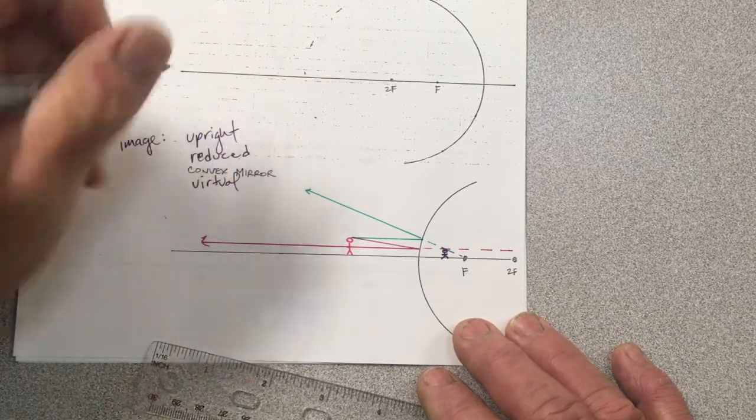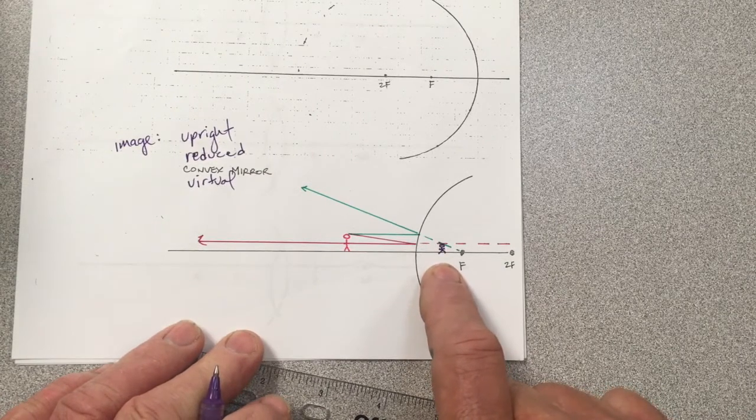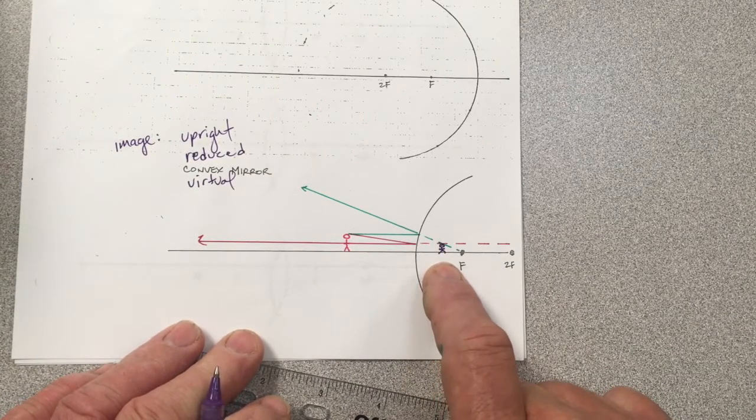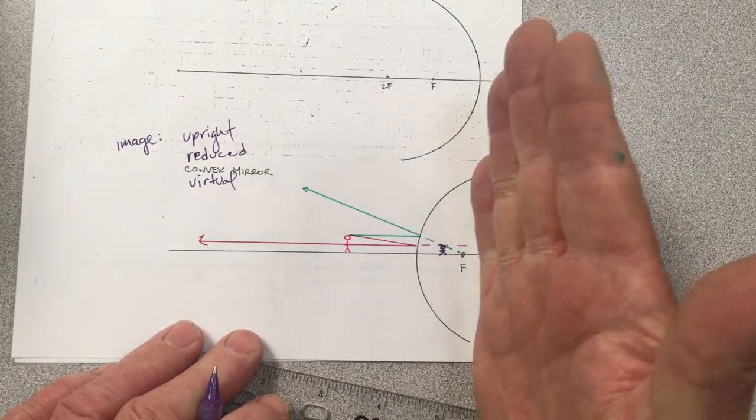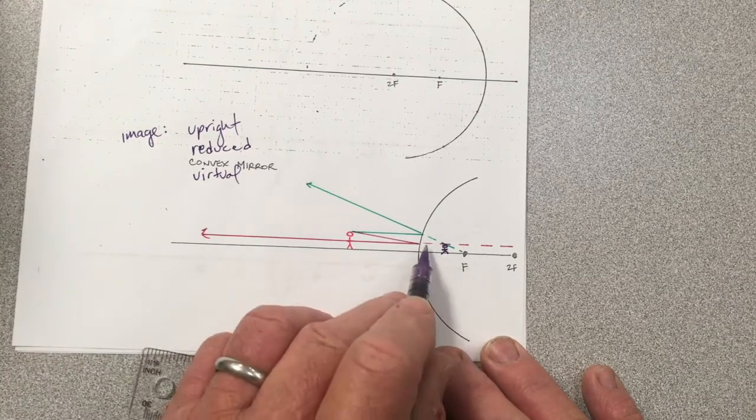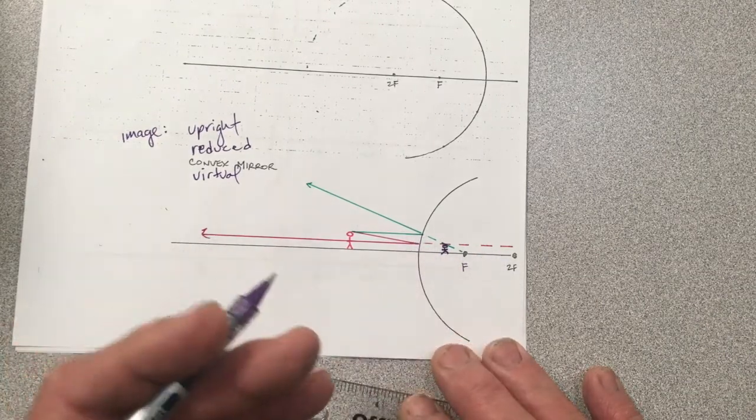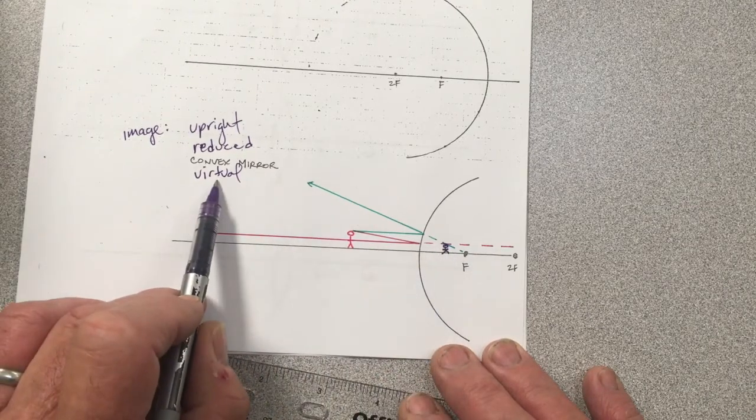It is virtual because you cannot put a piece of paper, a screen or a bed sheet or something behind the mirror and expect an image to show up in focus on that screen. We had to draw dotted lines and say that light came from somewhere we know it didn't. That's what leads to a virtual image.